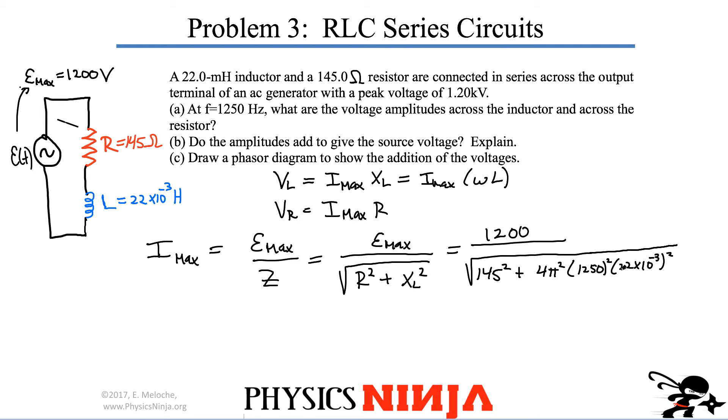Alright, you substitute all the numbers in there. I think I get an Imax, if I did everything correctly, equals 5.32 amps. That's our maximum current now. And again, there's going to be a phase difference between our driving voltage and the current in the circuit, but here we're only interested in the amplitude.